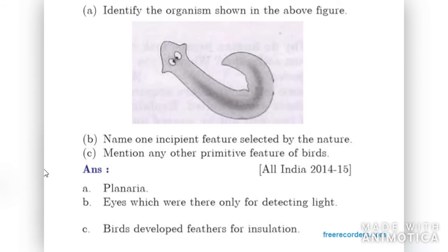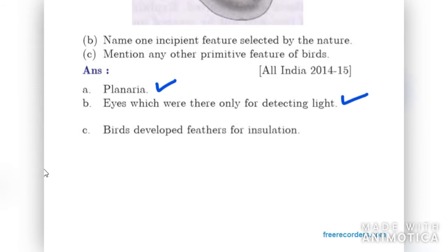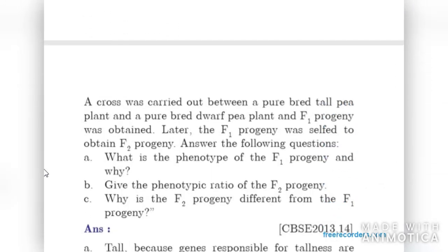Identify the organism shown in the figure — this is Planaria. Name one incipient feature selected by nature: eyes in Planaria were present only for detecting light. Mention any primitive feature of birds: birds developed feathers originally for insulation in cold weather — that is the primitive feature of birds.